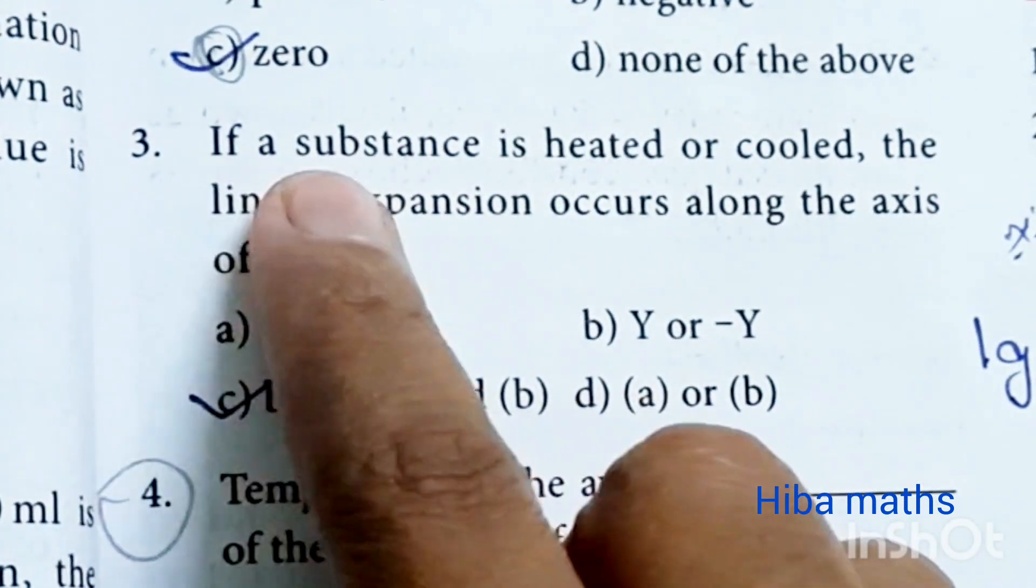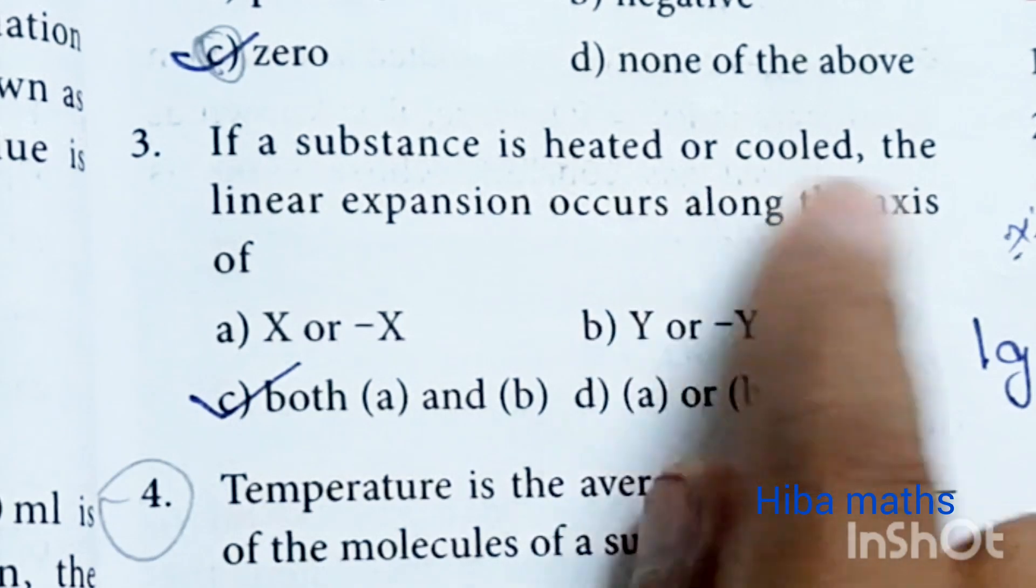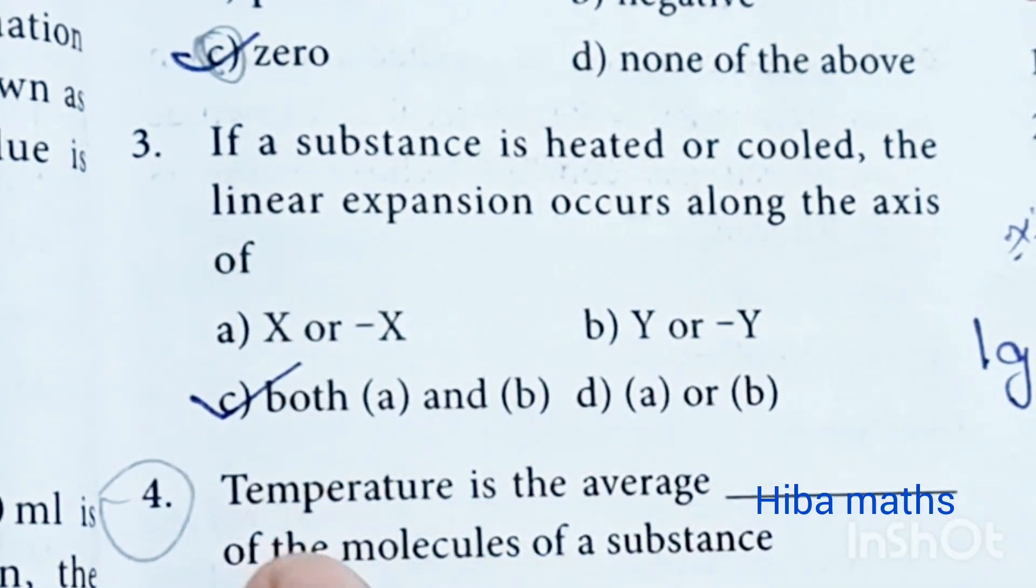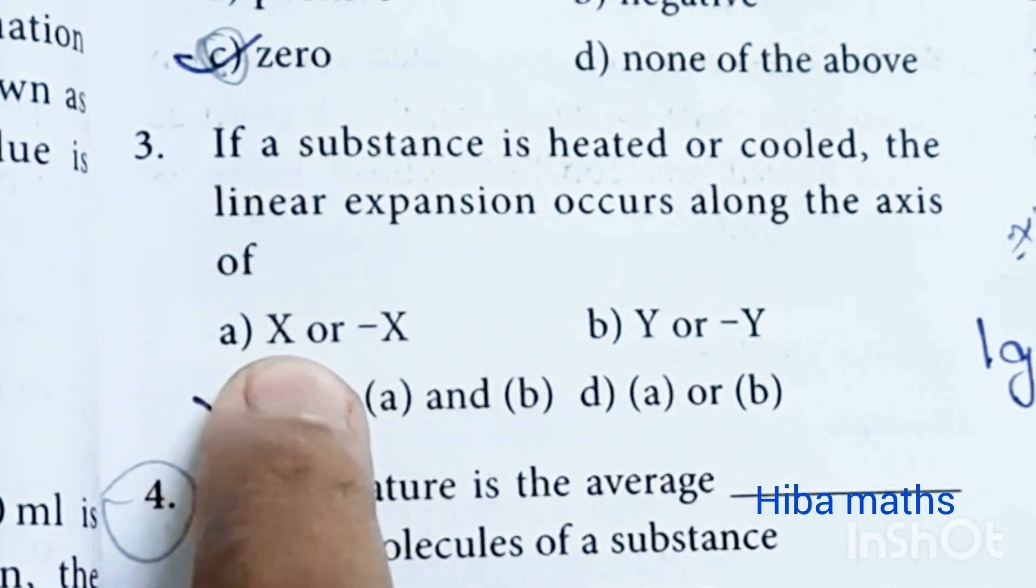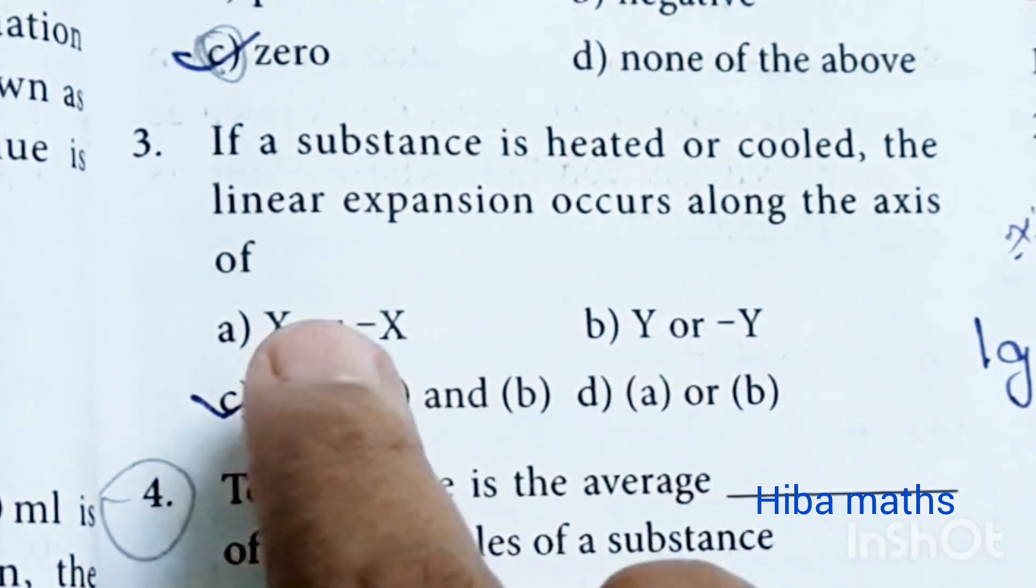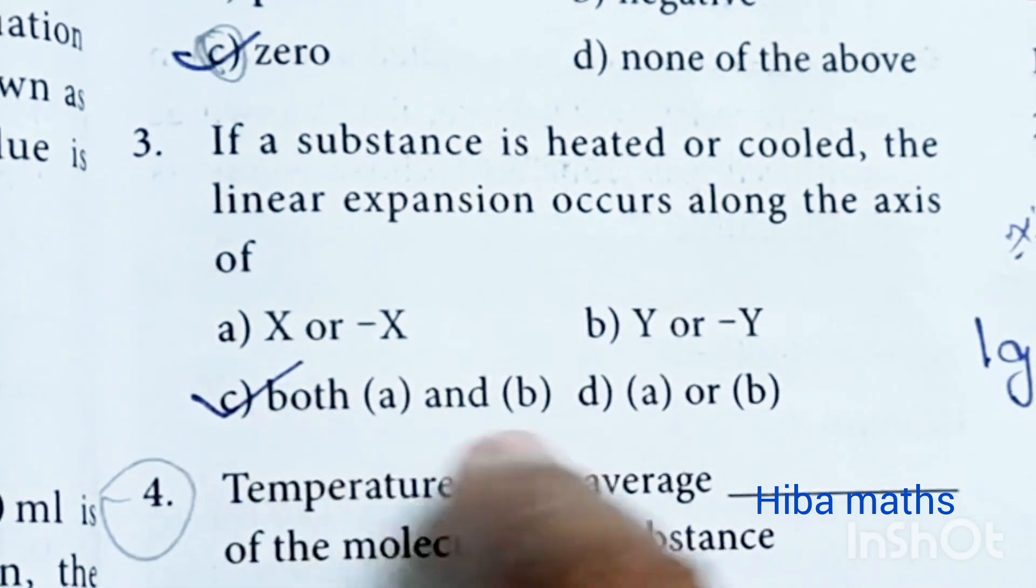What is the question? If a substance is heated or cooled, the linear expansion occurs along the axis. A is X or minus X, B is Y or minus Y. So either two of them are both A and B.